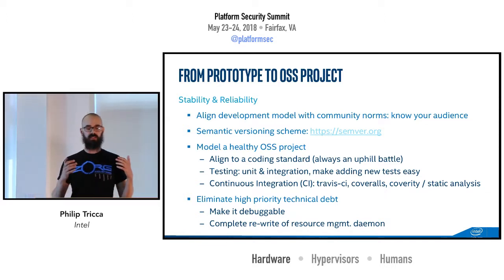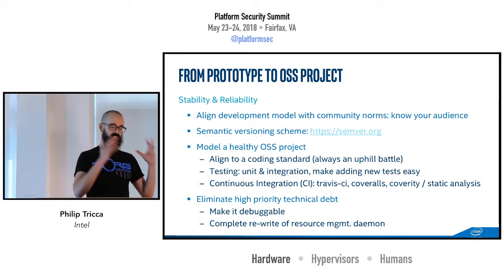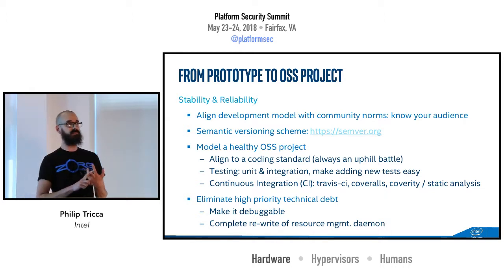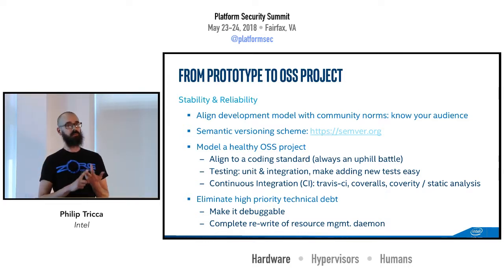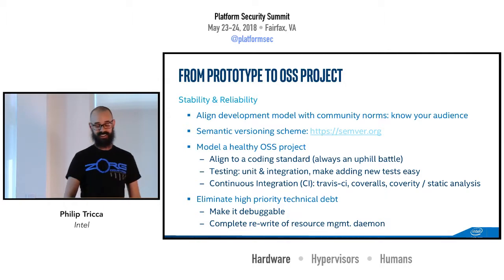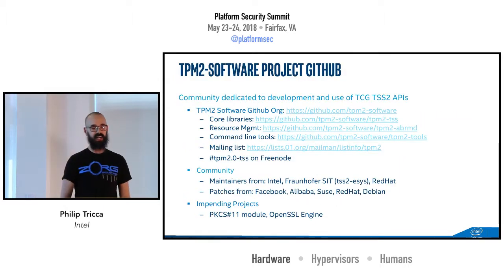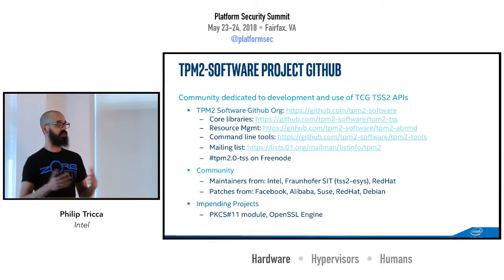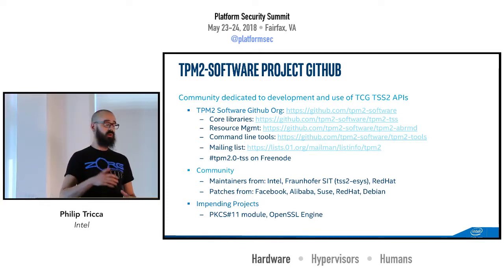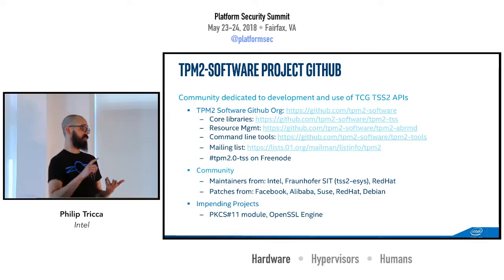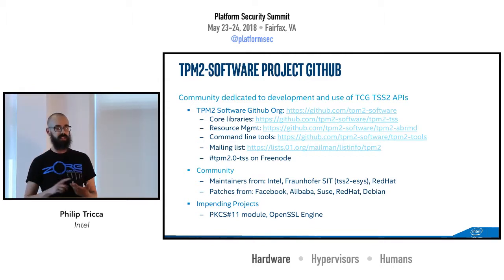We run Coverity scans on everything, collect code coverage metrics from all of our tests, and report through Coveralls. We started with probably single-digit test coverage and have gotten it over 80% coverage now, thanks to some of our collaborators. The original resource management daemon left behind by my predecessor — we just took it out back and put it out of its misery and started over. We now have an organization up on GitHub — we call it tpm2-software — with a bunch of repositories under it.